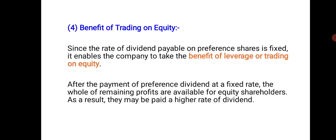Fourth, benefit of trading on equity. Since the rate of dividend payable on preference shares is fixed, it enables the company to take the benefit of leverage or trading on equity. When you issue equity along with some fixed-interest instruments like debentures or preference shares, you get the benefit of trading on equity. After payment of preference dividend at a fixed rate, the whole of remaining profits are available for equity shareholders, and as a result they may be paid a higher rate of dividend.